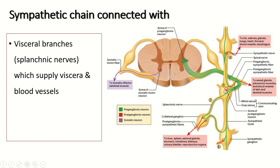Some preganglionic fibers within the sympathetic ganglion descend, some ascend without synapsing and synapse with postganglionic neurons above, some fibers synapse with postganglionic neurons below the sympathetic ganglion, and some fibers synapse with the postganglionic neuron at their own level. This postganglionic fiber re-enters the spinal nerve to supply the corresponding structures.